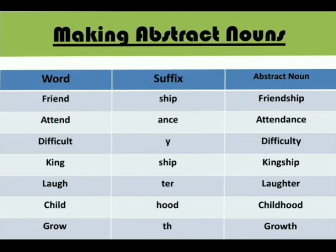Now let's make different abstract nouns with words and suffixes. Friend plus -ship becomes friendship, which is an abstract noun. Attend plus -ance, so attendance is an abstract noun. Difficult plus -y suffix, difficulty is an abstract noun. King plus -ship becomes kingship. Laugh plus -ter becomes laughter. Child plus -hood becomes childhood. And grow plus -th becomes growth. So abstract nouns can be made by adding suffixes to verbs or nouns.